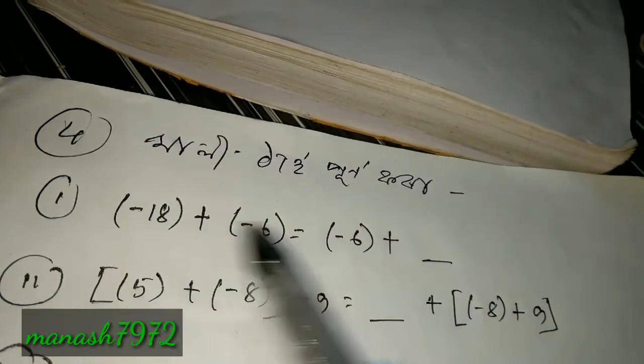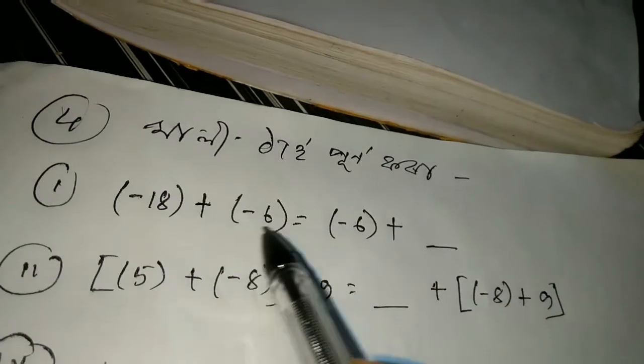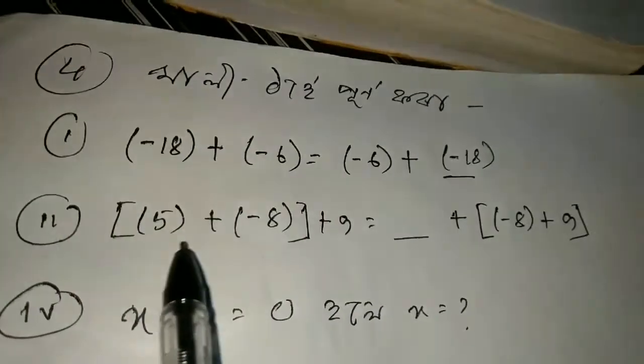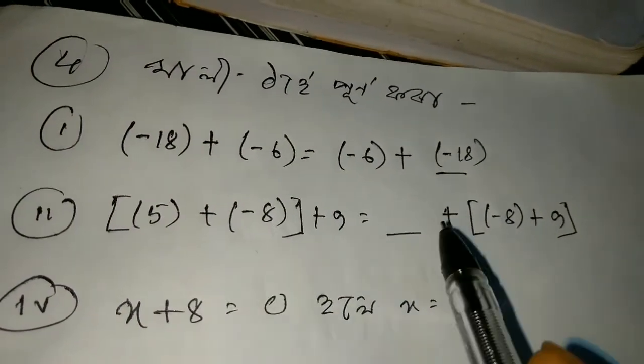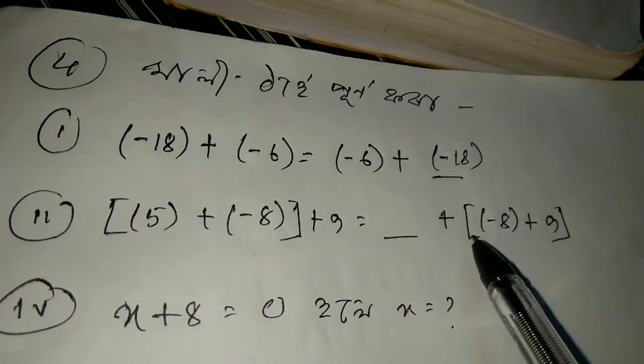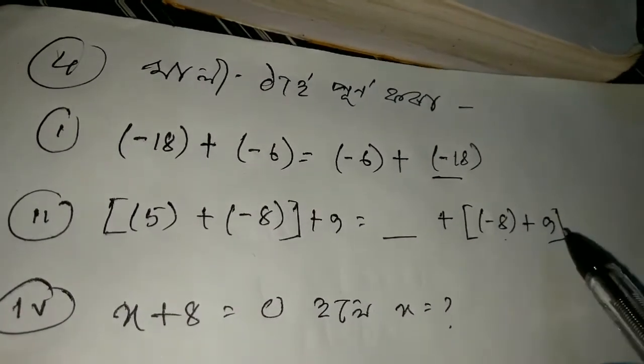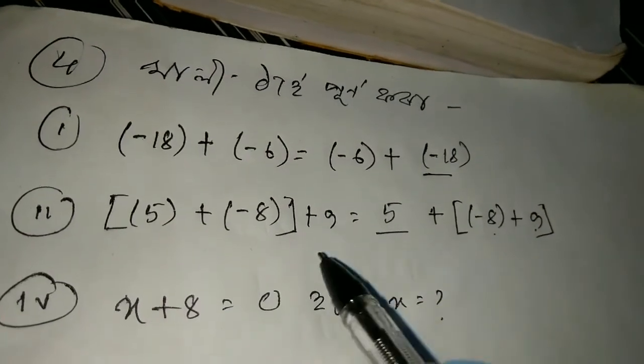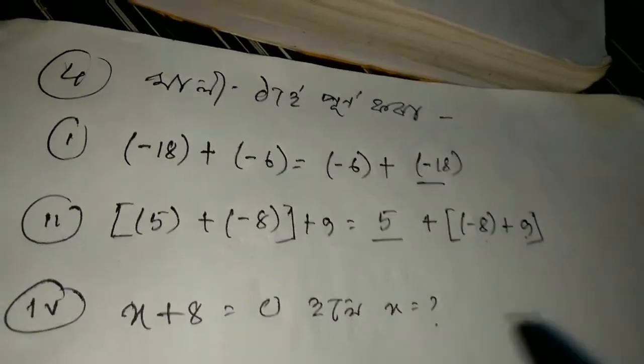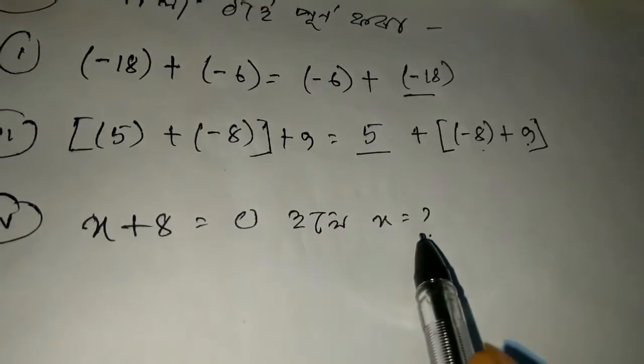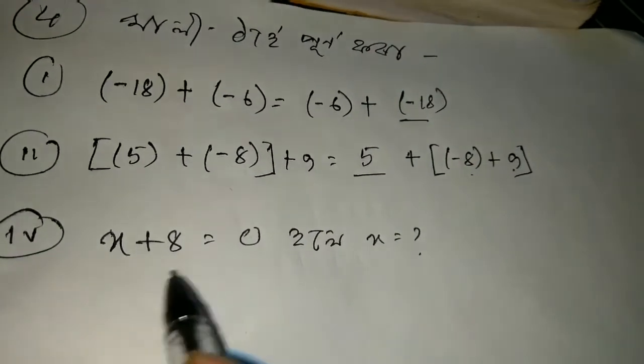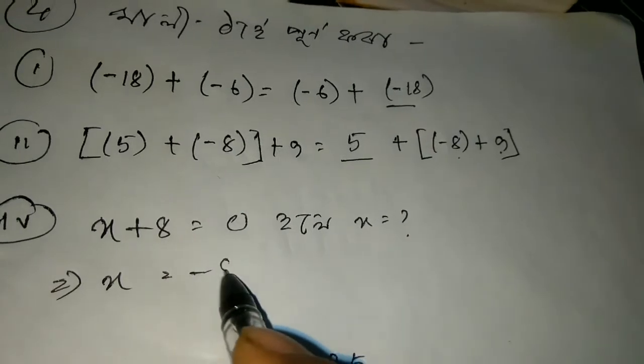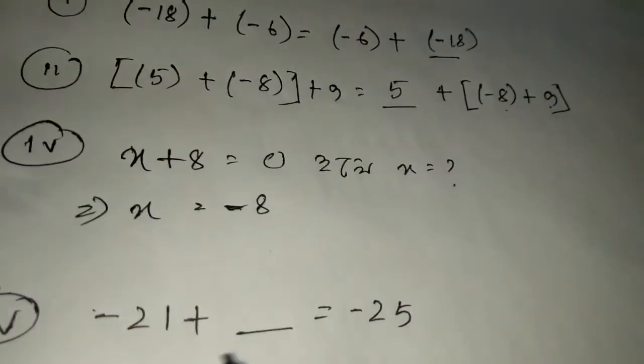This gives us 5 squared minus 8 squared, which equals minus 21.